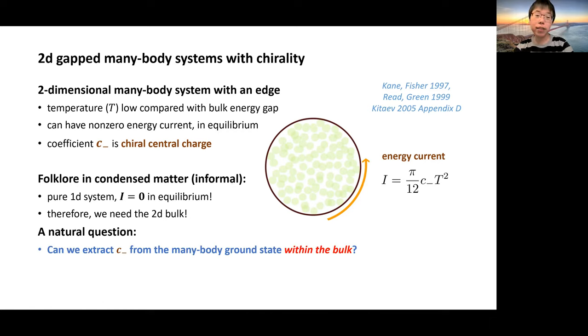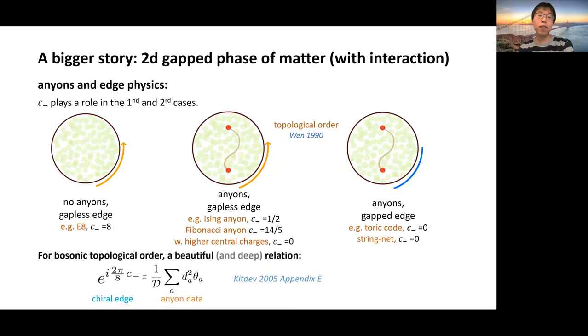Then the natural question is, can we extract the chiral central charge just from the ground state wave function within the bulk? When I said within the bulk, I really mean within the bulk, the blue region in the disk, which is large enough and is separated by enough distance from the edge. If we have a reduced density matrix on it, can we extract the information of the chiral central charge? That's the problem. And if we ask this question, then actually we delve into a bigger problem, a bigger puzzle.